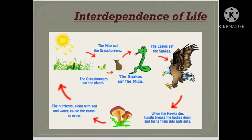Let's understand more about the interdependence of life through this picture. As you can see in this image, the nutrients along with sun and water cause the grass to grow. Then the grasshopper eats the plants. After that the mice eat the grasshopper. Then the snakes eat the mice. After that the eagle eats the snake. When the hawks die, fungus breaks the bodies down and turns them into nutrients, and again this circle completes and starts with the sun one more time. So we understand how plants, animals, birds, and insects need each other for food and water.